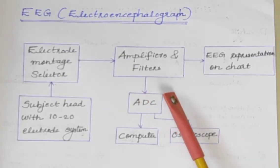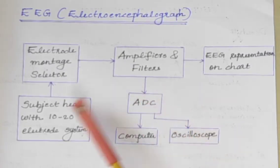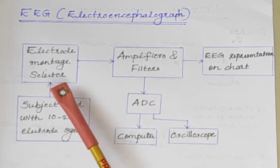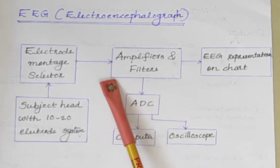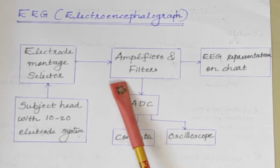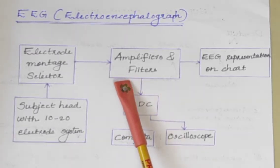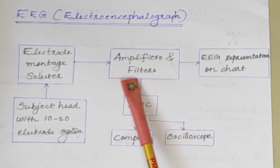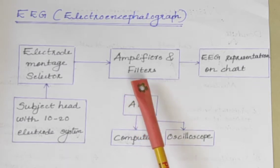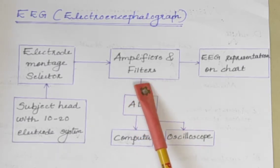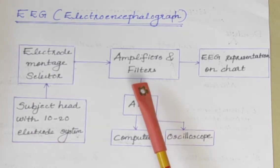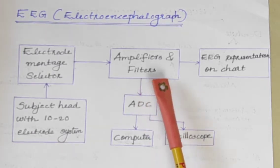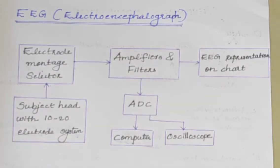Good morning students. Today we will discuss EEG, Electroencephalograph. EEG is an instrument used for recording of electrical activity of the brain. It is an effective method for diagnosing many neurological disorders such as epilepsy, tumor, etc. The block diagram of EEG is shown here.